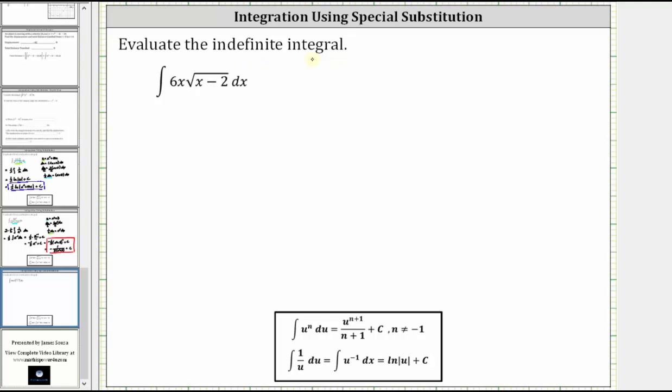We're asked to evaluate the indefinite integral. Looking at the integrand function, notice how we have an x outside the square root as well as an x under the square root, which means we're going to have to perform u substitution in order to integrate, but we'll have to perform a special type of u substitution.